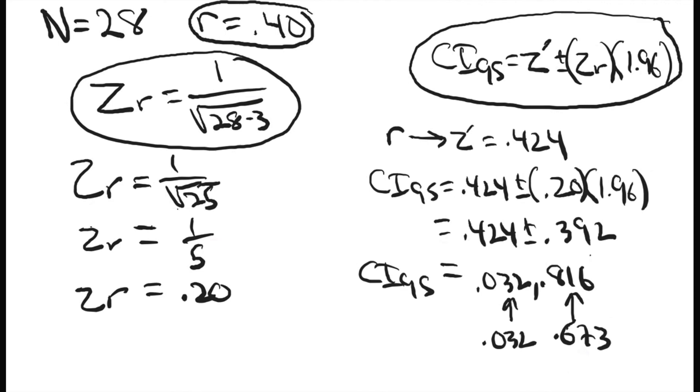Just a little reminder, these are now r's. I'm 95% confident that the population correlation coefficient, rho, is contained within this interval, ranging from 0.032 to 0.673. That is how you calculate a confidence interval for a correlation coefficient. See you next time.